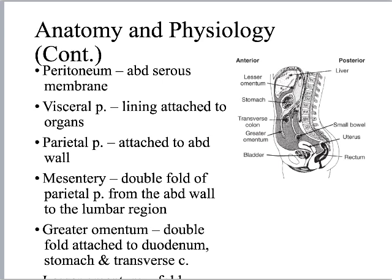The anatomy of the abdomen is an organized mess — think of it like a garbage bag. Most of the guts are inside this garbage bag, but some are behind it, and some organs are outside of it. That garbage bag is called the peritoneum — an abdominal serous membrane that gives some structure to the disorganization of the abdomen. There is stuff within it (intraperitoneal) and stuff behind it (retroperitoneal). The visceral peritoneum lines and attaches to organs, while the parietal peritoneum is attached to the abdominal wall.